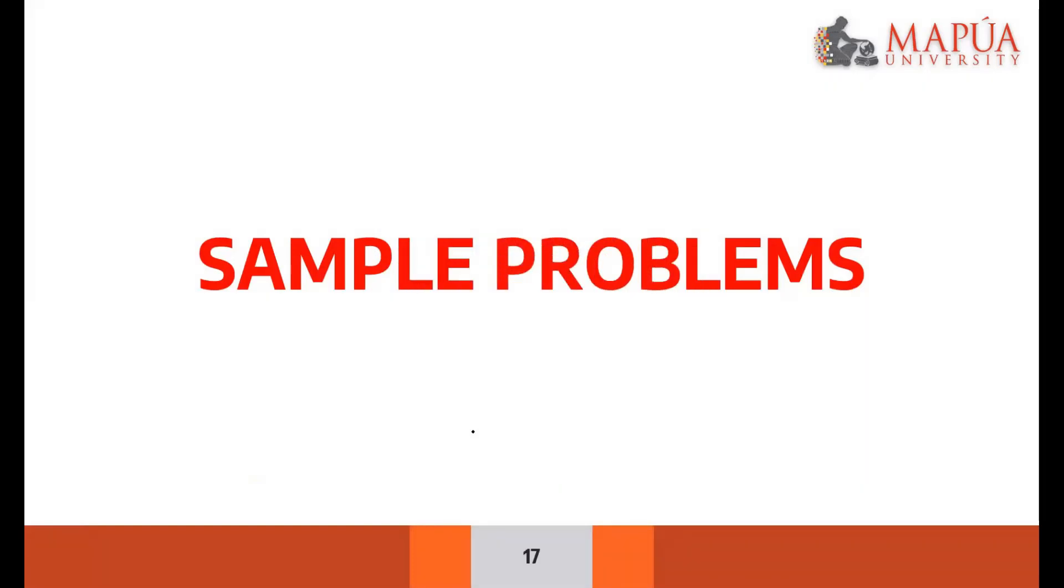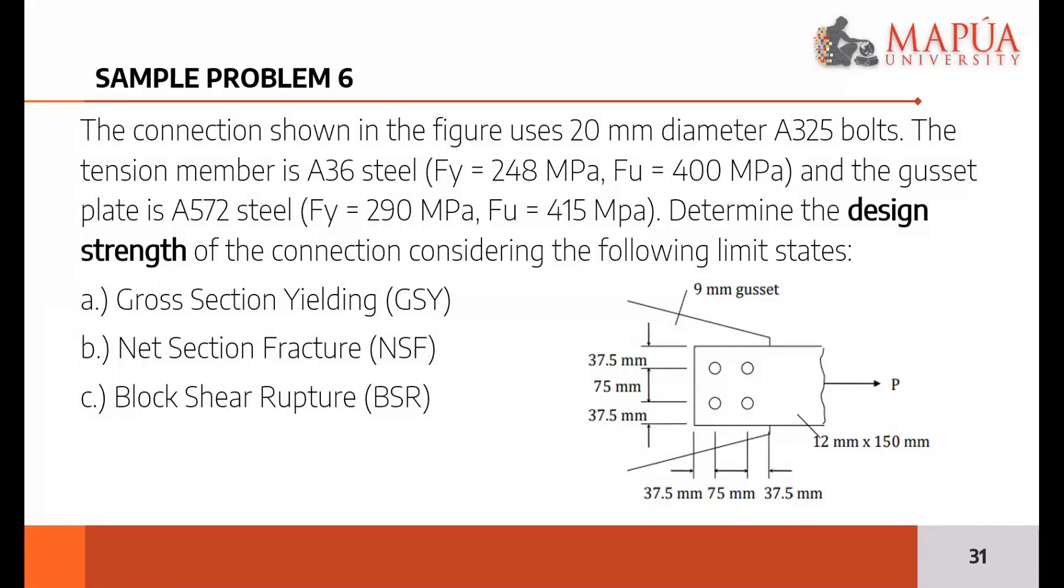Okay, so let's move into the sample problems. Let's have this example, last example for tension member. So we have a connection shown in the figure that uses 20mm diameter bolts. So that's the D bolt. So that means, what's the D effective? 20 plus 4. So D effective is 20 plus 4 because it's less than 24mm.